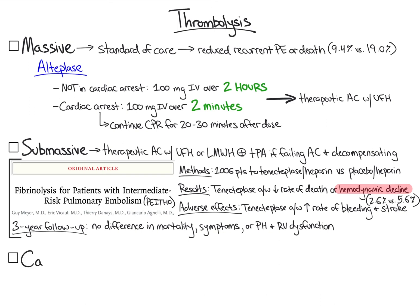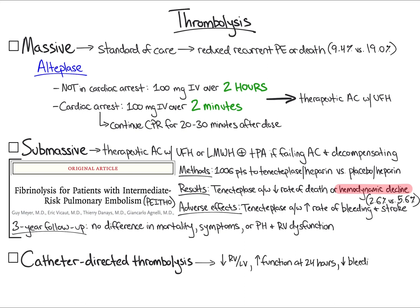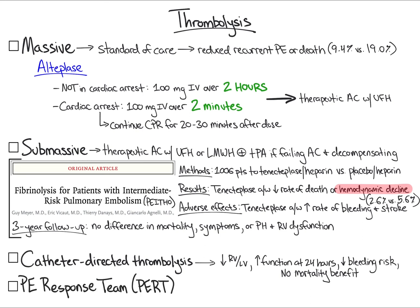Another possible treatment option is catheter-directed thrombolysis. Small trials have shown that catheter-directed therapy, where thrombolytics are delivered directly to the pulmonary arteries via a catheter, decreased RV-to-LV ratio, increased RV function at 24 hours, and decreased risk of bleeding. Trials thus far have shown no mortality benefit. To determine whether a patient with submassive PE is a good candidate for systemic thrombolysis or catheter-directed thrombolysis, the PE Response Team, or PERT, can be consulted if available.